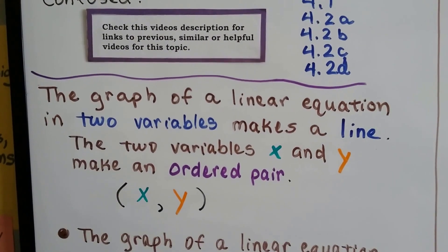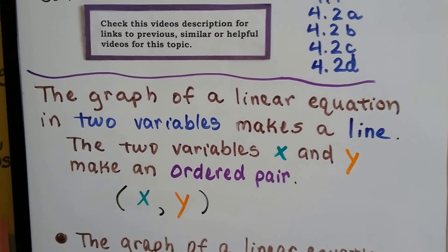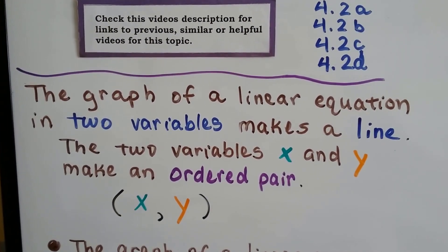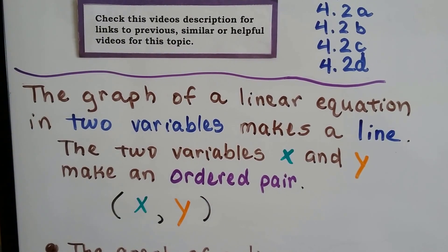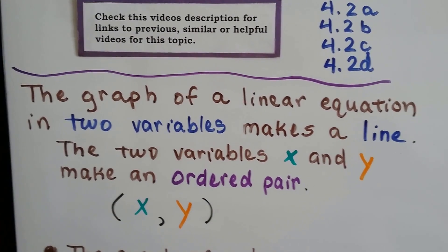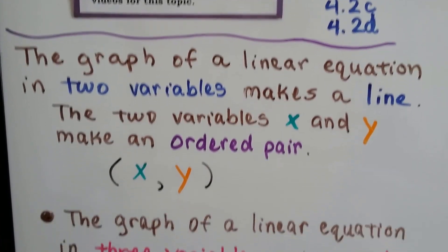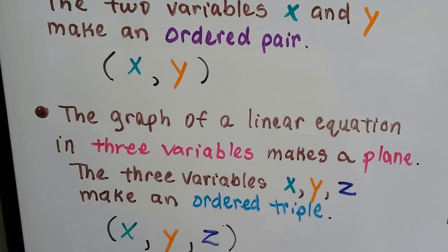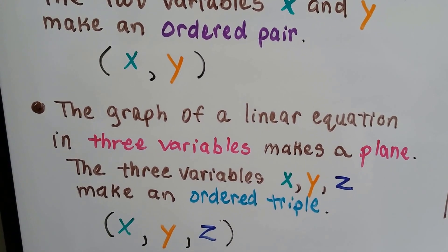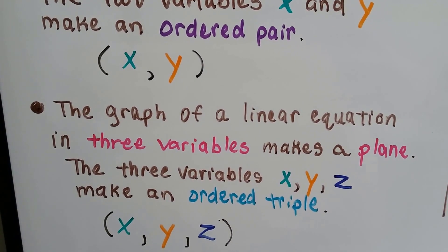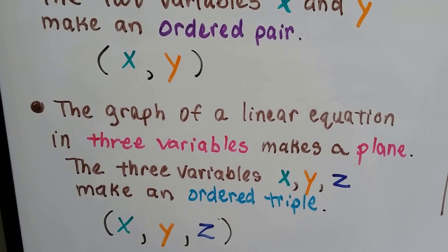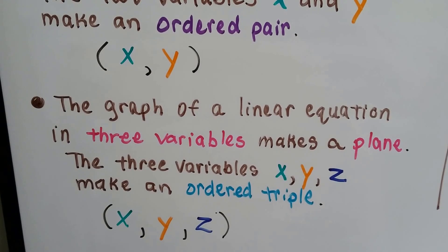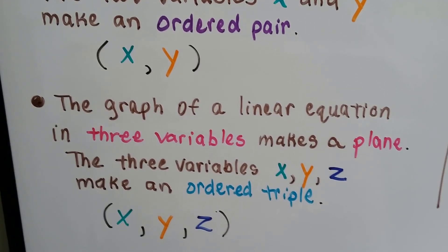The graph of a linear equation in two variables makes a line, and the two variables x and y make an ordered pair. The graph of a linear equation in three variables makes a plane. The three variables x, y, and z make an ordered triple.